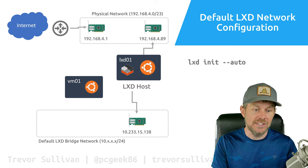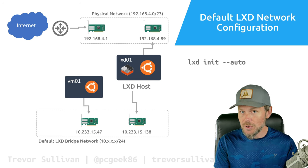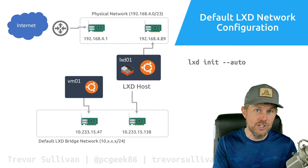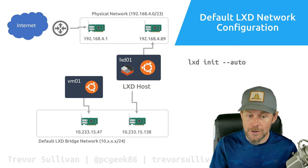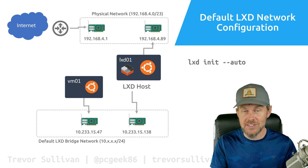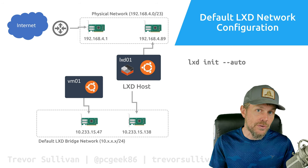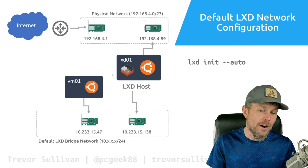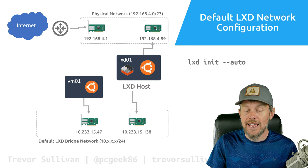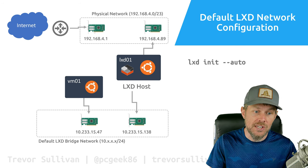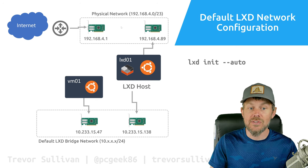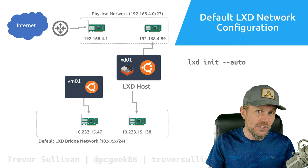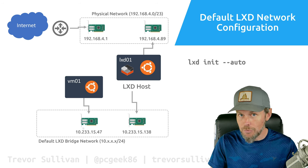When you deploy virtual machines — let's say an Ubuntu virtual machine — that VM gets a network interface attached to the same bridge network. This means the Ubuntu virtual machine and the LXD host operating system can communicate with each other on the virtual bridge network. If the virtual machine needs to get out to the internet, it can route through the bridge interface on the LXD host and out through the physical network adapter. However, other devices on your internal physical network are not going to be able to make inbound connections to the virtual machine because it's protected behind this NATed bridge network.